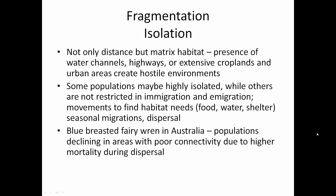Isolation requires considering not only distance but presence of water, highways, extensive croplands, and urban areas. If an animal needs to move from one patch to another and there's an interstate or canal in between, it won't be able to move even if it's a short distance. Some populations may be highly isolated while others have unrestricted immigration. The blue-breasted fairy-wren in Australia declined because of poor connectivity due to higher mortality during dispersal — it simply wasn't able to cross some matrix habitats.